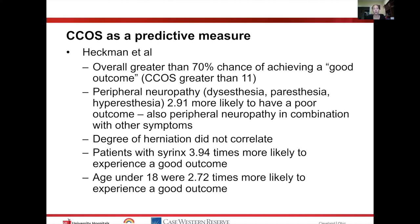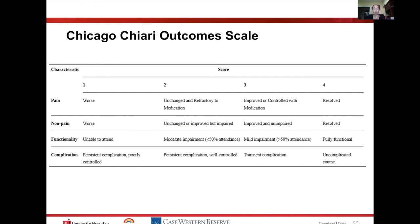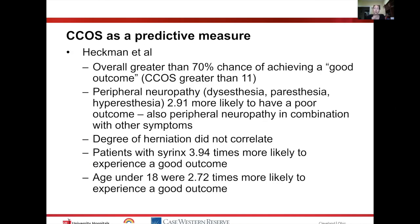Overall, for all Chiari patients, there is probably a greater than 70% chance of achieving a good outcome, defined as a score greater than 11 — meaning most symptoms improved or resolved, minimal impairment, and only transient or no complications. Looking at individual symptoms, dysesthesias, paresthesias, or hyperesthesias were more likely to be associated with a poor outcome. The degree of herniation does not correlate with outcome. Patients with a syrinx actually do the best, and children more so than adults are more likely to experience a good outcome.